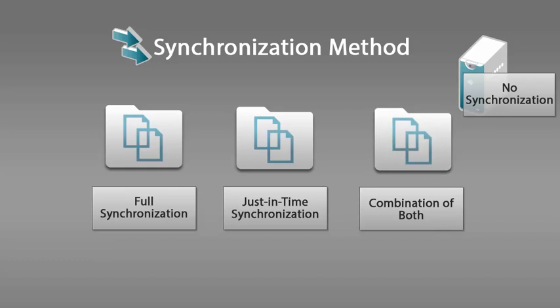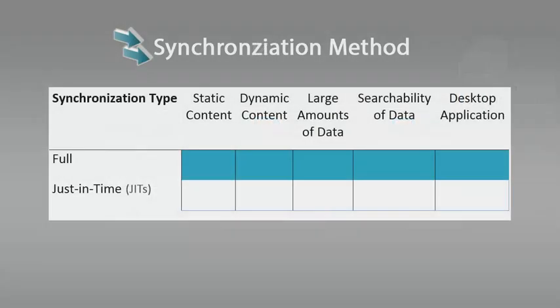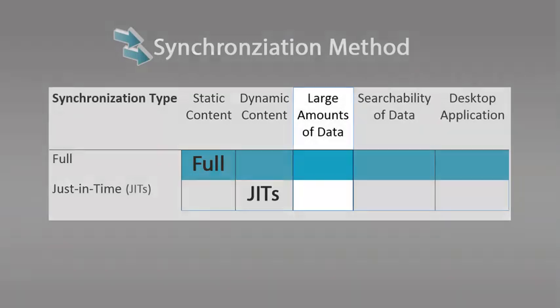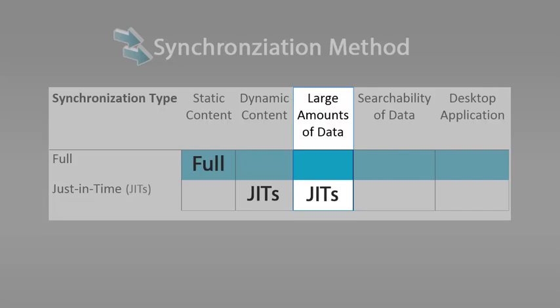There is no perfect implementation that applies to all netfolders. Instead, review the data that the netfolder is accessing and consider the following. Is the data static or dynamic? Full synchronization is more appropriate for static data, and just-in-time synchronization is more appropriate for dynamic data. Is there a large amount of data? If so, consider using only just-in-time synchronization, because performing a full synchronization on a large amount of data can consume many resources.